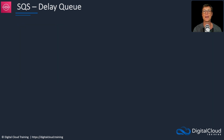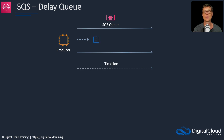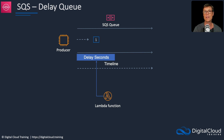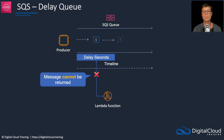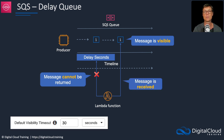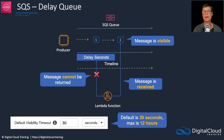There's another concept called a delay queue. With a delay queue, a producer adds messages to the queue, and for a specific period of time we can delay the visibility of that message — it's not visible. If a Lambda function tries to process that message within the configured delay seconds, nothing will happen because it can't see the message. After the delay seconds expires, the message becomes visible and the Lambda function is able to process it. We configure this through the default visibility timeout. Within the first 30 seconds of delivery to the queue, the message is not visible. The default is 30 seconds and the maximum is 12 hours.